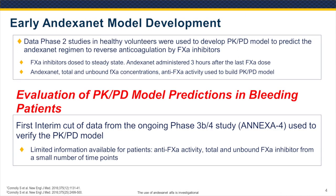Early in the development of the molecule, phase 2 dose ranging studies were done to determine the doses needed to reverse anticoagulation. During these studies, healthy subjects were dosed at steady state with each of the direct factor Xa inhibitors — apixaban, rivaroxaban, and edoxaban. On the last day, andexanet was administered three hours after the last dose of the factor Xa inhibitor. On the day prior to and the day of andexanet dosing, rich sampling was done to allow determination of andexanet PK, as well as the total and unbound concentration of the factor Xa inhibitor and anti-factor Xa activity. All of those elements were used to build the PKPD model.